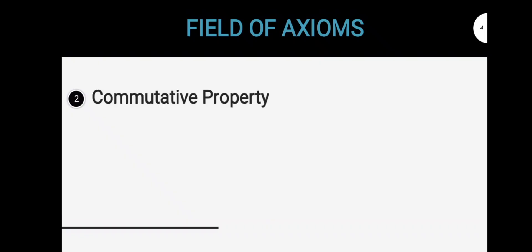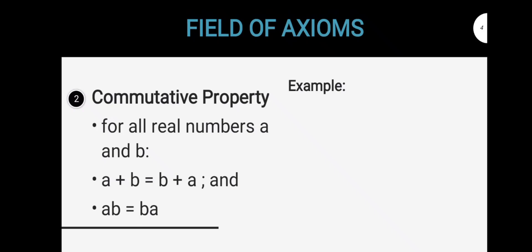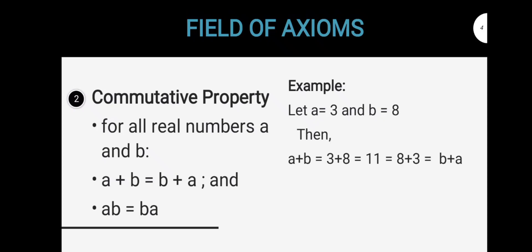The second one is the commutative property. It states that for all real numbers A and B, A plus B is equal to B plus A, and A times B is equal to B times A. In other words, commutative property has something to do with the order. For example, we let A be equal to 3 and B be equal to 8. Then, its sum will be equal to 11, which is also equal to B plus A. And A times B, wherein its product will be equal to 24, which is also equal to B times A.